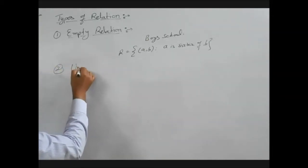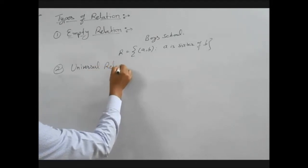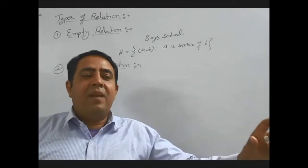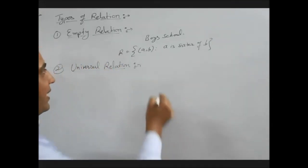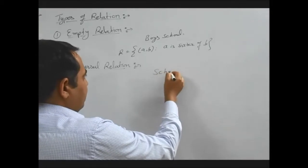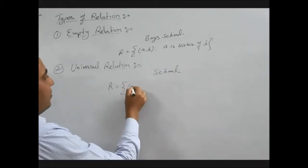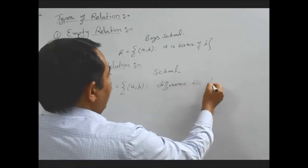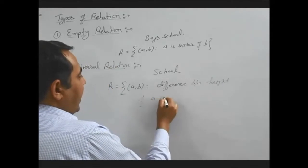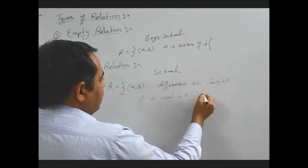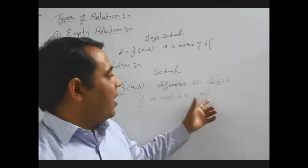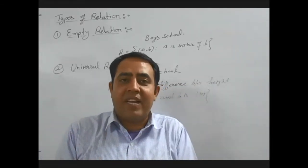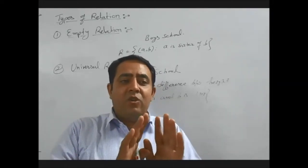Second, universal relation. Universal relation means all elements of set A are related with elements of set B — no element remains behind. We can take an example: in a school, relation R is given by {(A, B) such that the difference between the height of A and B is less than 1 meter}. Now we can clearly see that 1 meter is a large distance, so whenever we take two students of any school and measure their height difference, we will always find it is not more than 1 meter.